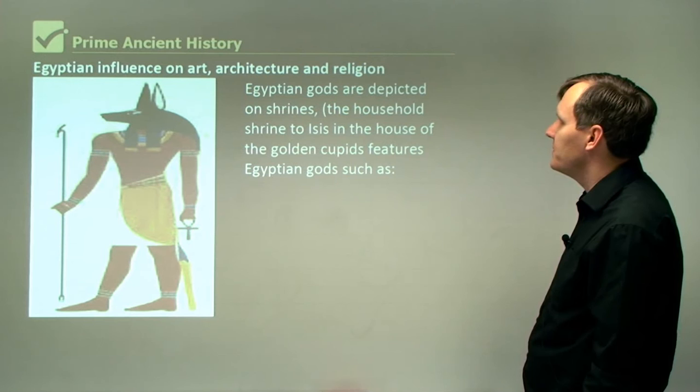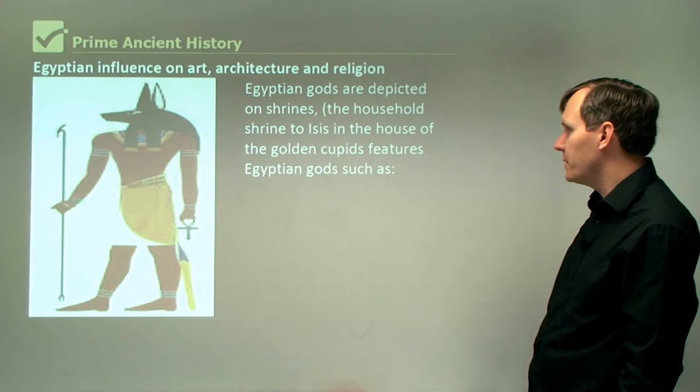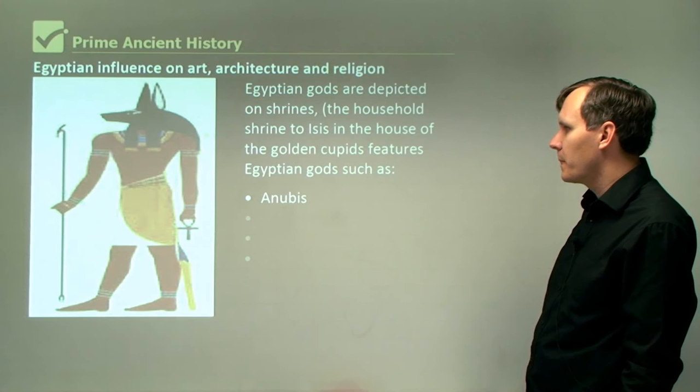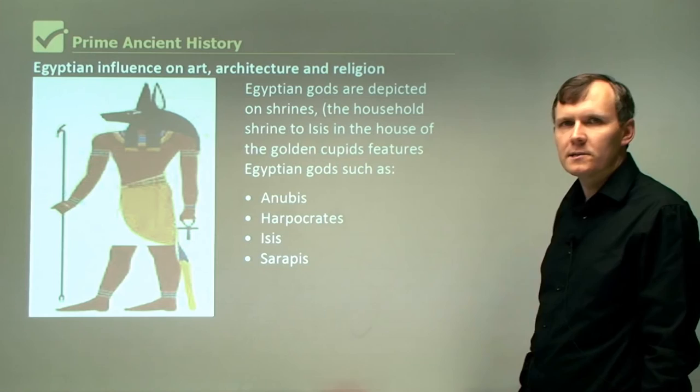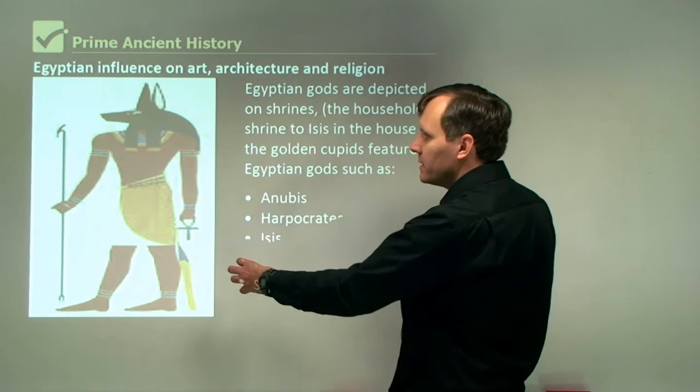Egyptian gods are depicted on shrines. The household shrine to Isis in the House of the Golden Cupids features Egyptian gods such as Anubis, Harpocrates, Isis, and Serapis. In this picture, we can see one of the Egyptian gods — this is Anubis.